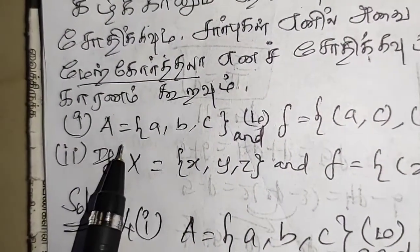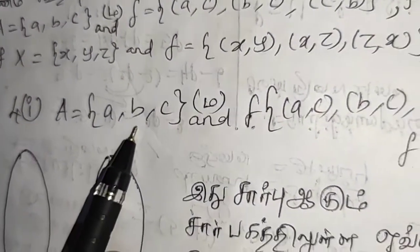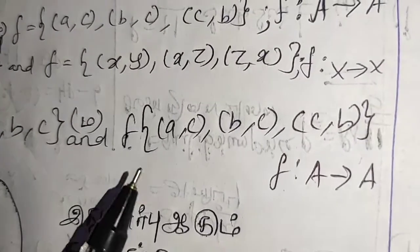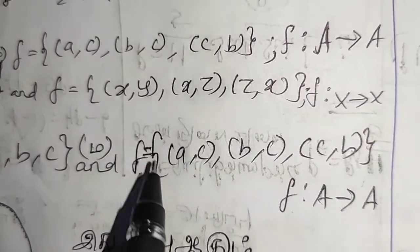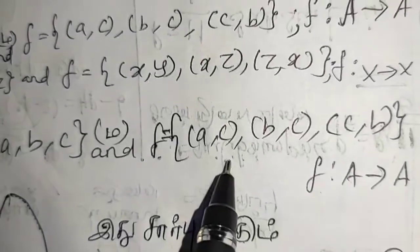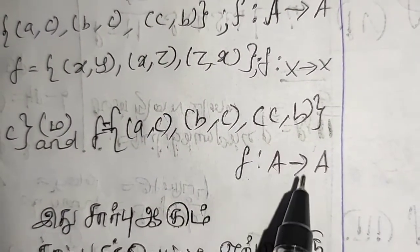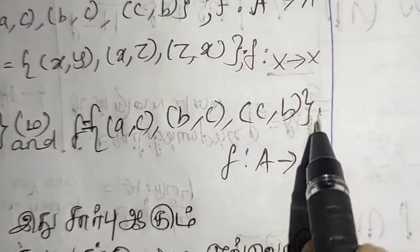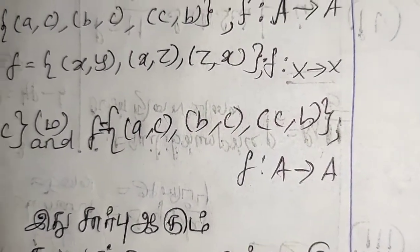So, we have two questions. First one: A is equal to the set {a, b, c}, and f is equal to the set {(a,c), (b,c), (c,b)}. F is a function from A to A.